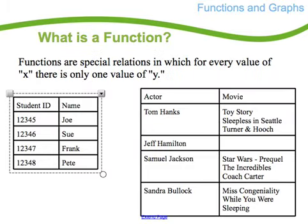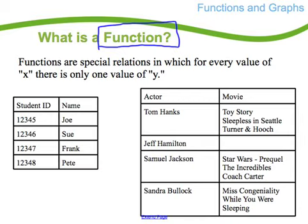When we're looking at something called a function, a function is a special kind of relation in which for every value of x, there's only one value of y. For example, if I look at the student ID and the name associated with that, there's only one name for each ID number. Wouldn't it create havoc if you had one student ID and multiple names associated with it?